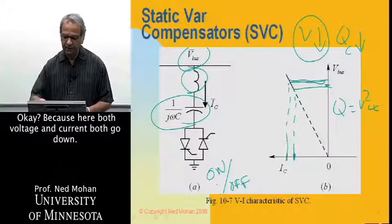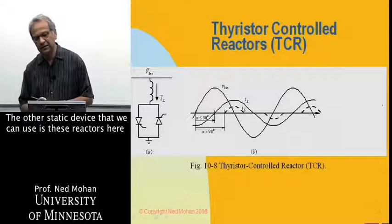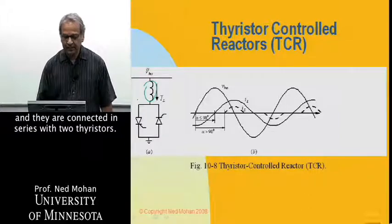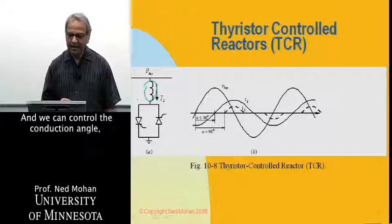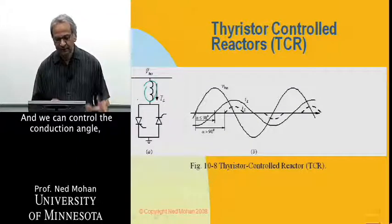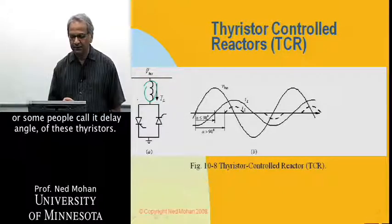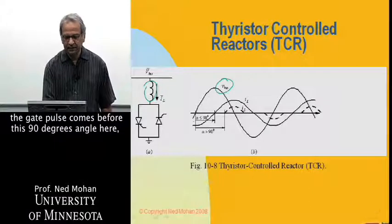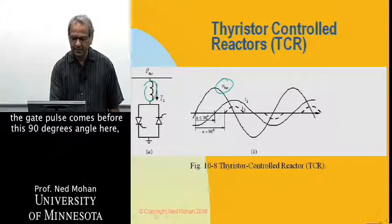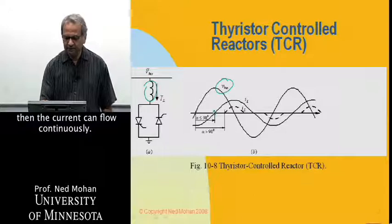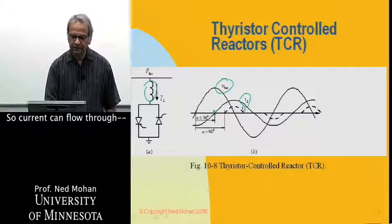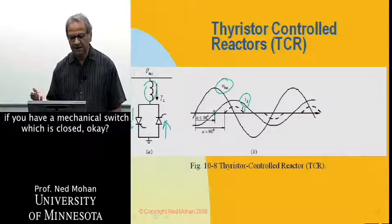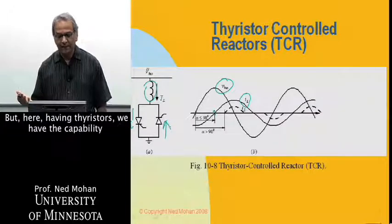Because with a capacitor, both voltage and current go down together. The other static device we can use is a reactor connected in series with two thyristors, where we can control the conduction angle, or delay angle, of these thyristors. If the gate pulse comes before the 90-degree angle with respect to the bus voltage, the current can flow continuously — in the positive direction through one thyristor and in the negative direction through the other, as if you have a closed mechanical switch.